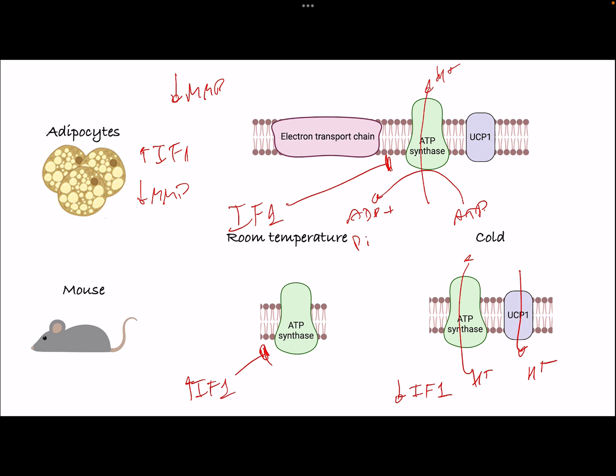We also show that in vivo, when you overexpress IF1 in brown adipocytes in mice and we stimulate adrenergic signaling in those animals, they have lower heat production when IF1 is overexpressed.